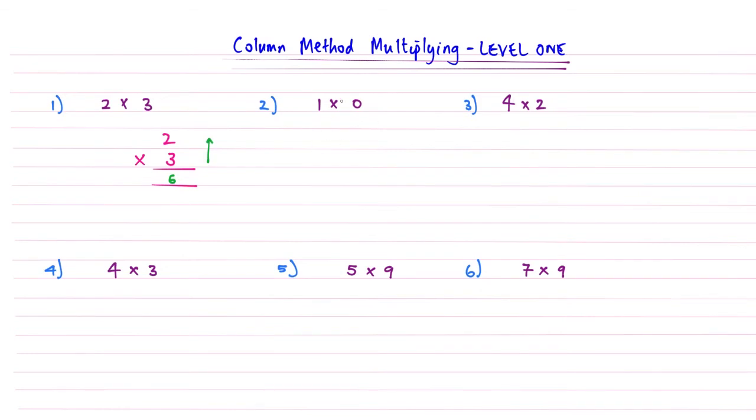That's all a quick question too. Now we've got 1 times 0. I know the answer is going to be nothing, but we're just getting used to setting up the column method for multiplication. So 1 times 0, we write them 1 on top of the other answer line. 1 lot of nothing is going to be nothing, or nothing times 1. 0 times 1 gives me 0.